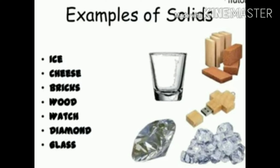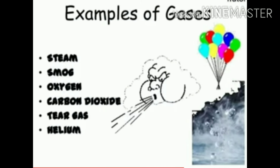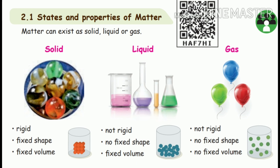Can you give some examples for solid? Wood, bricks, etc. And the examples for liquid: water, oil, milk, juice — these are all liquid. And the examples for gas: oxygen, steam, vapour, etc. Today we are going to discuss about the properties of solid, liquid and gas.